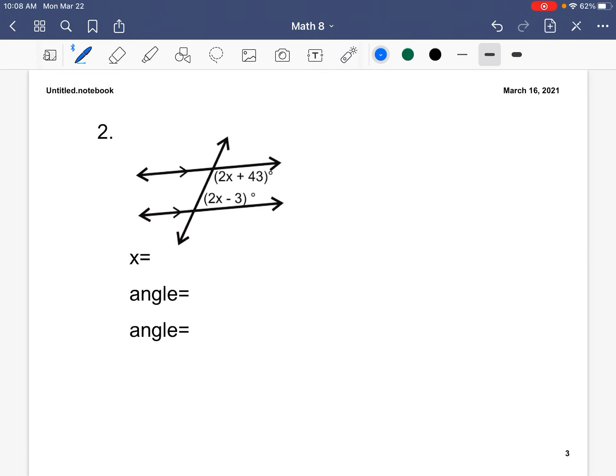So for our next example, these are same side interior, and we have two missing angles this time. So first we are going to write our equation 2x plus 43 plus 2x minus 3 equals 180. So the first thing we are going to do is combine our like terms. Our like constants are positive 43 and negative 3. Our like variables are 2x and positive 2x.